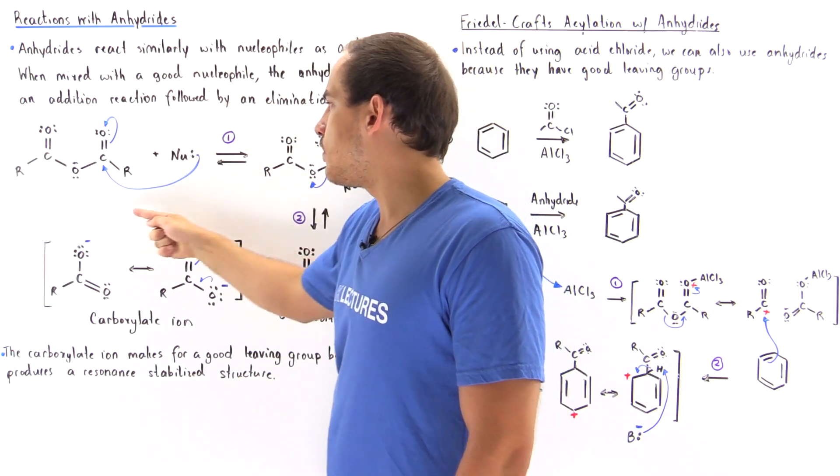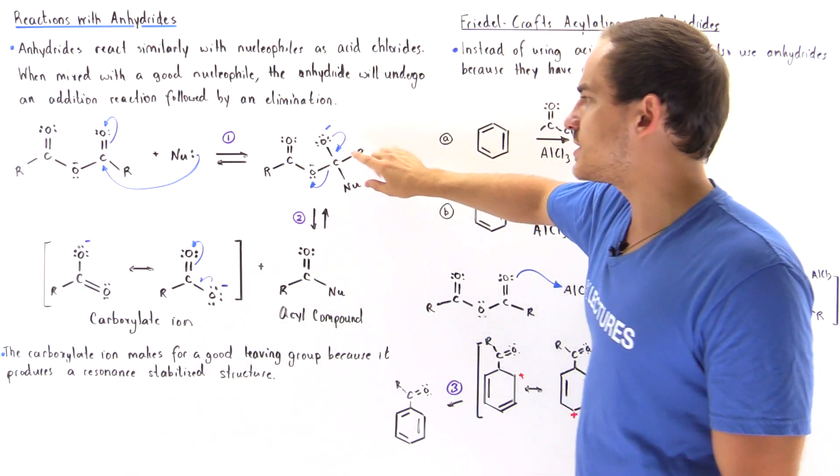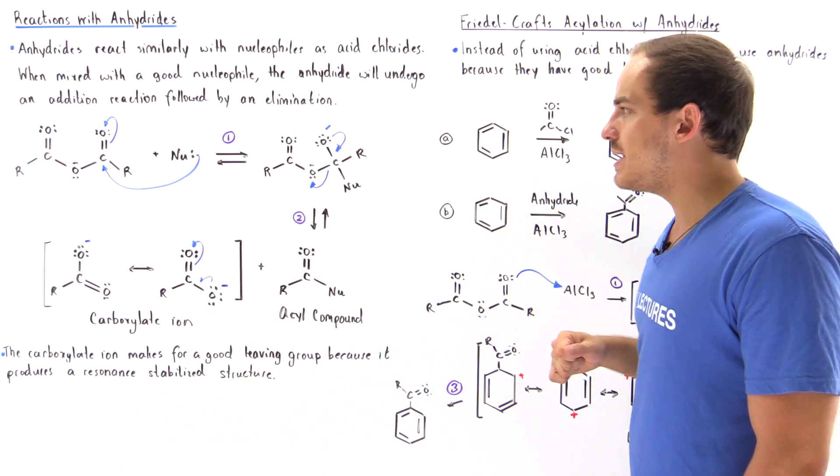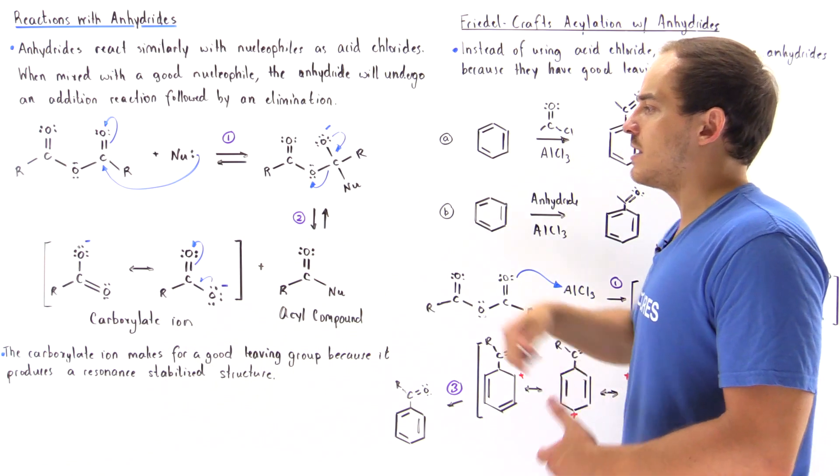the nucleophile forms a bond with carbon displacing the pi bond. We form this tetrahedral intermediate in which we have a negative charge on the oxygen. And in the second step,